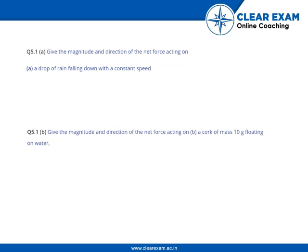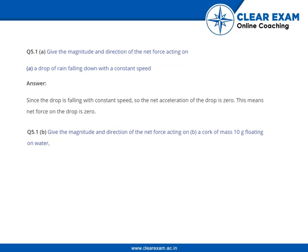Give the magnitude and direction of the net force acting on a drop of rain falling down with a constant speed. Since the drop is falling with constant speed, the net acceleration is zero. This means the net force on the drop is zero.